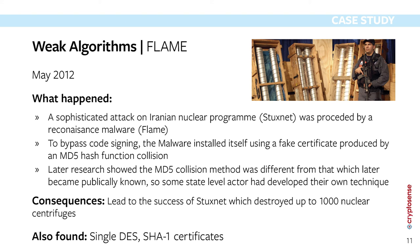Other weak algorithm examples include single DES — most people know it should be phased out since the key is too short and can be brute-forced using cloud computing without great expense. SHA-1 certificates are also a concern: browser manufacturers started refusing SHA-1 certificates in 2016, and in recent years a chosen-prefix collision attack — the kind that allows creation of a fake certificate — has become feasible on SHA-1 at reasonable cost. SHA-1 must be rooted out of systems.